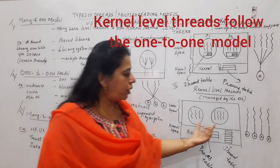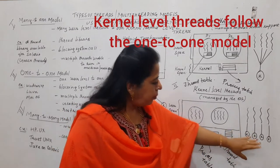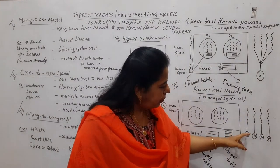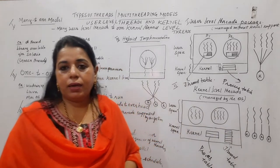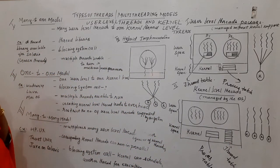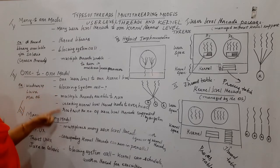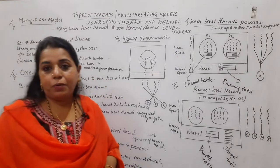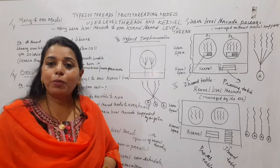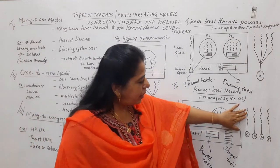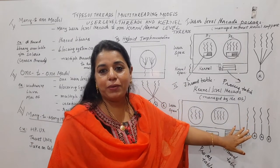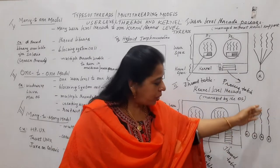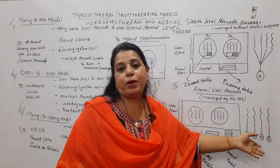Kernel-level threads use the one-to-one model. One user thread is mapped to one kernel thread — that is why it is called one-to-one. Regarding blocking system calls in this model: if one thread makes a blocking system call, only that particular thread gets blocked, whereas other threads can continue their execution because they are mapped to their own corresponding kernel threads.